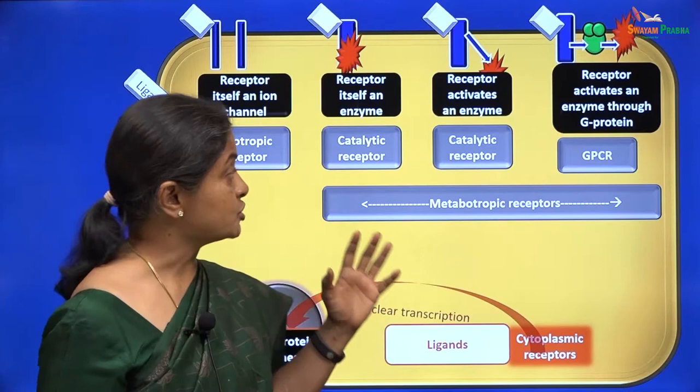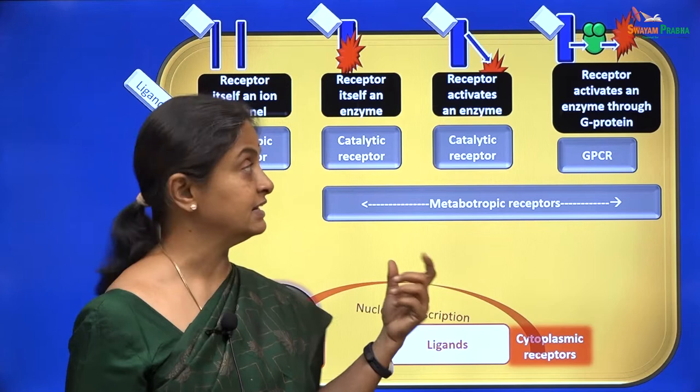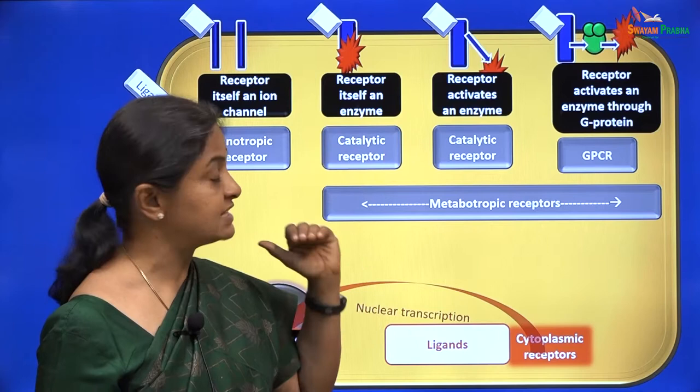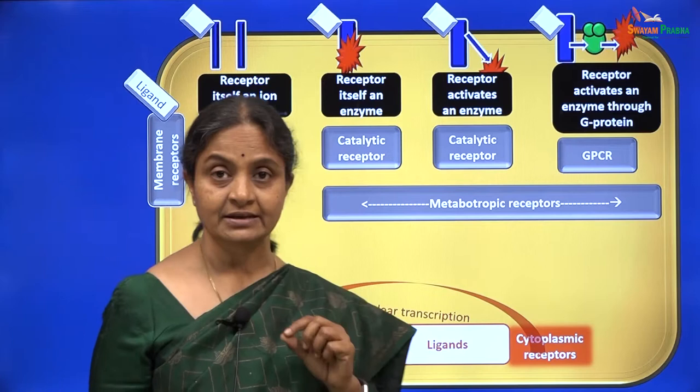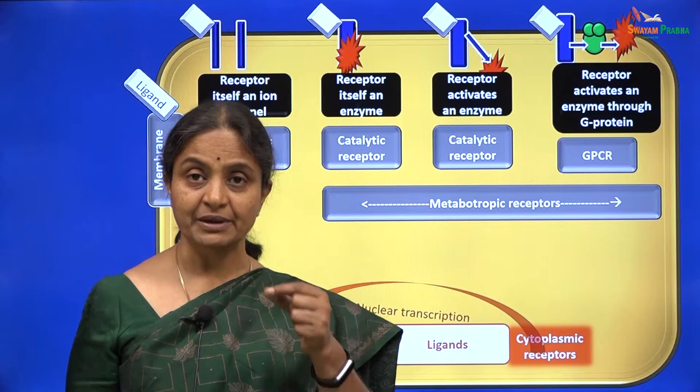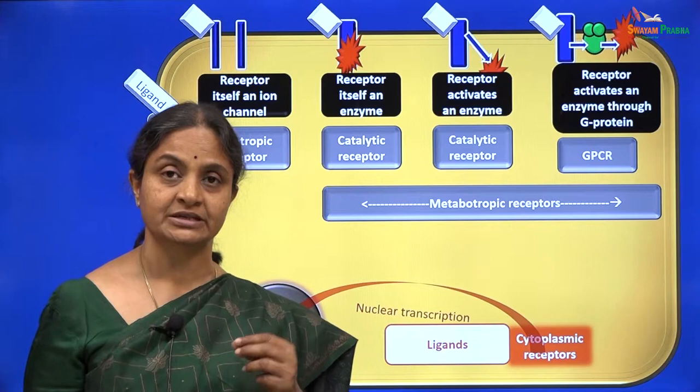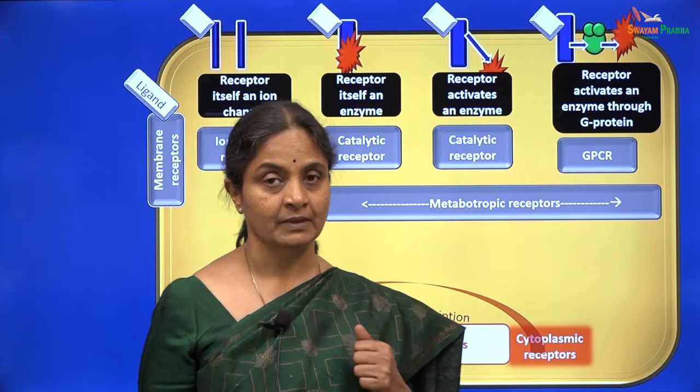Recalling the earlier session on cell signaling mechanisms, we had one condition where the receptor itself is an enzyme. The atrial natriuretic peptide binding to membrane guanylyl cyclase is a good example of that situation — the ANP receptor is indeed the enzyme itself, and binding of ANP to that receptor activates the guanylyl cyclase activity within it.